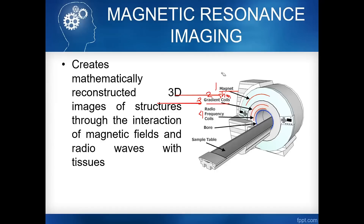Kaya tayo gumagamit ng shim coil. Ang purpose ng shim coil is to improve the homogeneity of the external magnetic field. Again, the primary magnet is the source of the external magnetic field. The shim coil is used to improve the magnetic field homogeneity. The gradient coil is used to localize the MRI signal or to produce slices — X, Y, and Z. And the RF coil is the source of the radio frequency — pwede siyang maging transmitter or receiver or both.